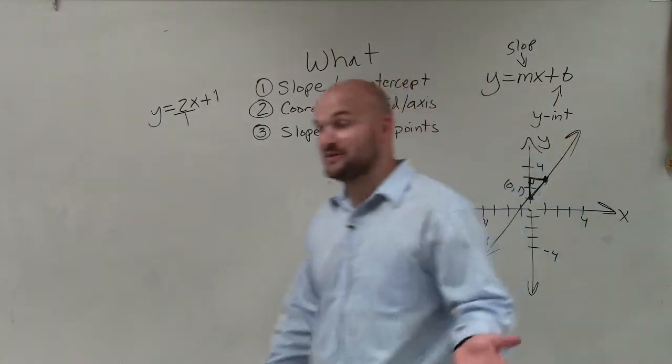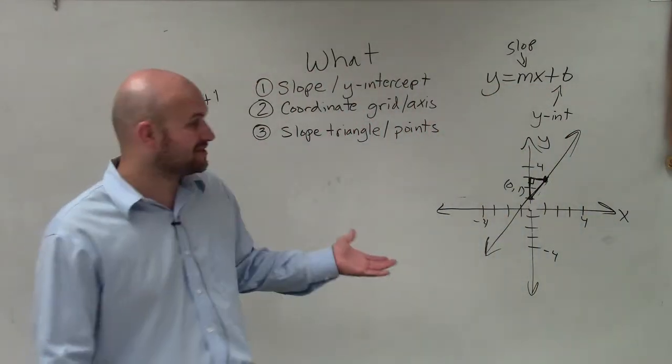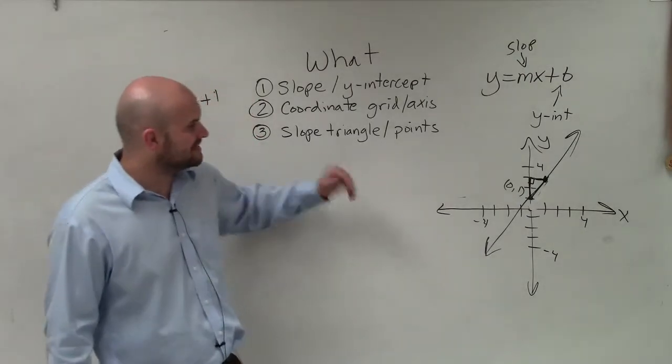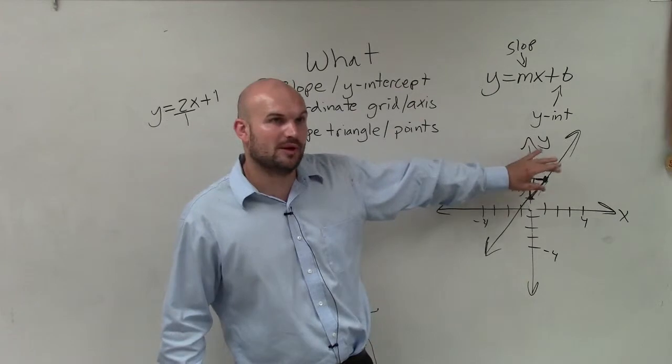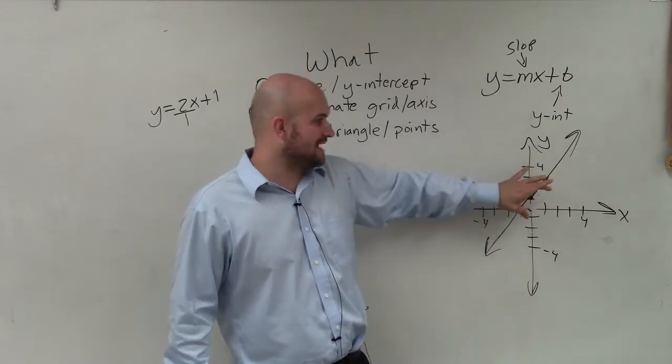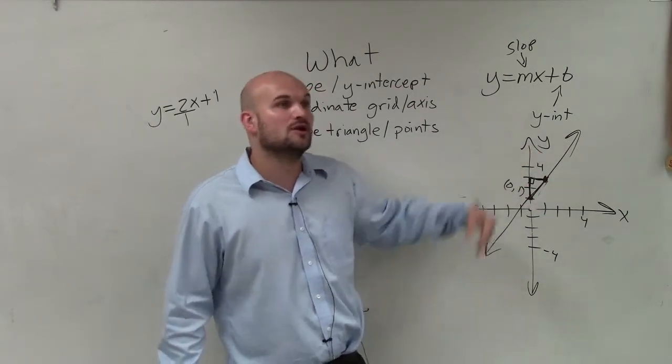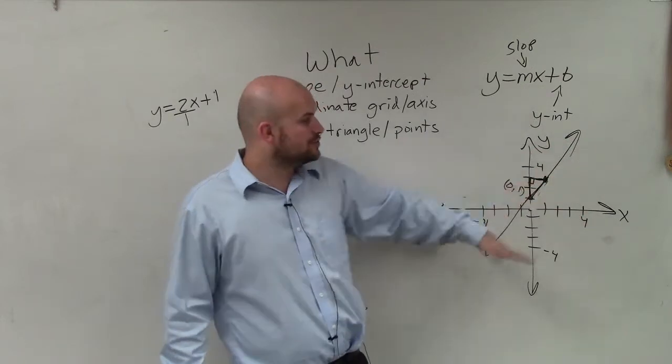So actually, I just went through exactly how to graph in slope-intercept form. Those are the basic things you're going to want to know. We use the slope triangle to identify the slope between any two points. That's important because now we're just given the values of the slope triangle, and we need to find the next point to create the line.